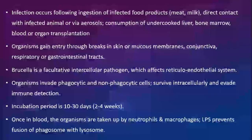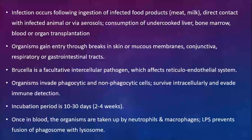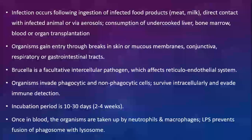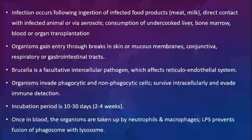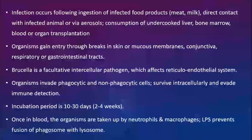The mode of transmission: infection occurs following ingestion of infected food products such as meat or unpasteurized milk, or through direct contact with infected animals, or by inhalation of infective aerosols released by animals. It can also be transmitted through consumption of undercooked liver or bone marrow, and has been recorded in cases of blood or organ transplantations. Organisms can gain entry through cuts, abrasions, breaks in skin or mucous membranes, conjunctiva, or through the respiratory and gastrointestinal tracts.